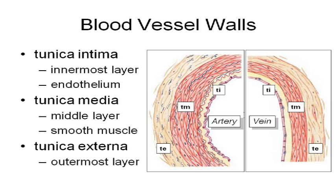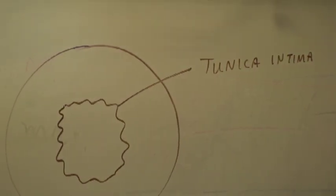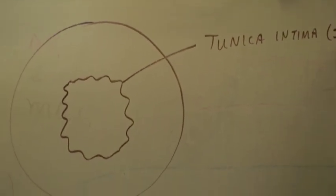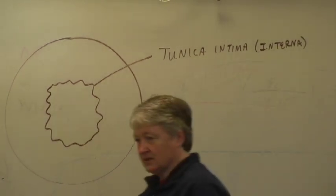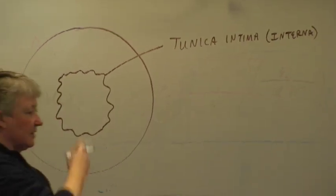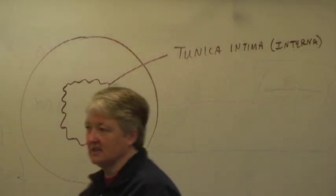If you look at a typical artery or a typical vein, there are three layers to the wall of that blood vessel. The innermost layer — the layer that's touching the blood — is called the tunica intima. Some textbooks call it the tunica interna; they are the same thing.